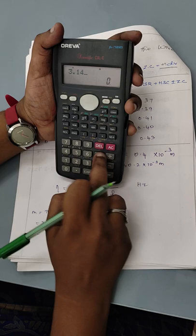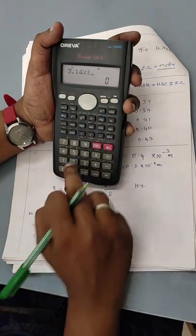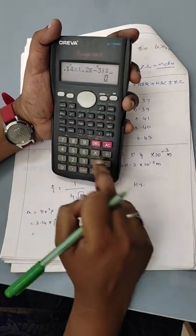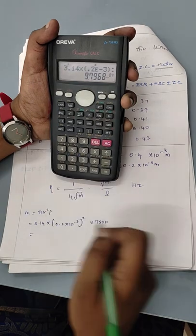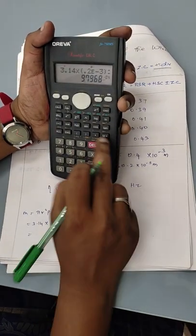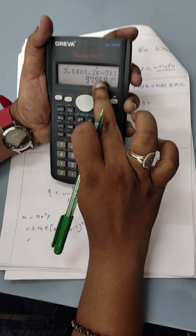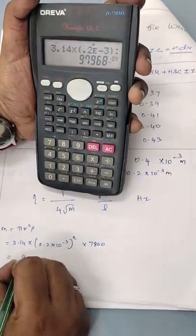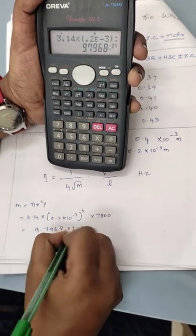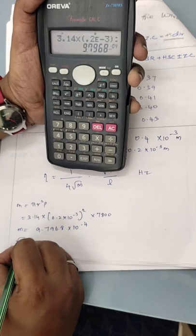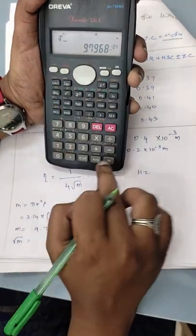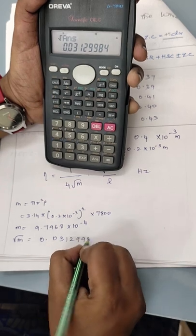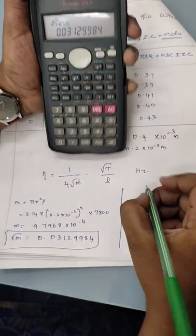So we can calculate M value. 3.14 into, I'm opening the bracket, 0.2 exponential of minus 3, close the bracket square into 7,800. So I'm having 9.7968 into 10 to the power minus 4. That's M. So I need to find root M value, so you put root of answer, gives out 0.03129984, this is going to be your root M value.